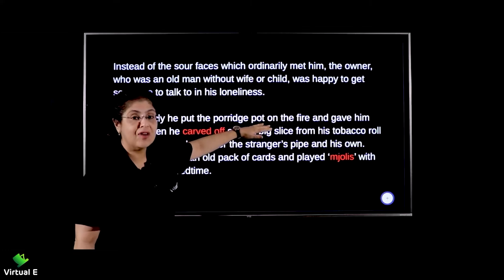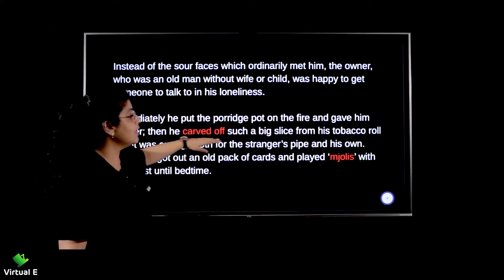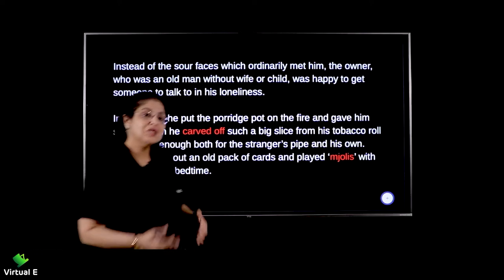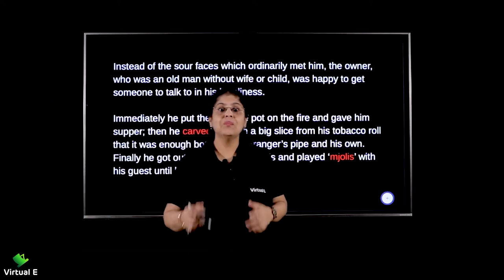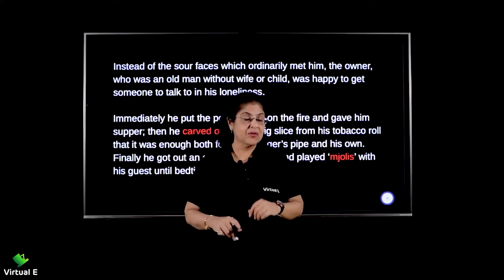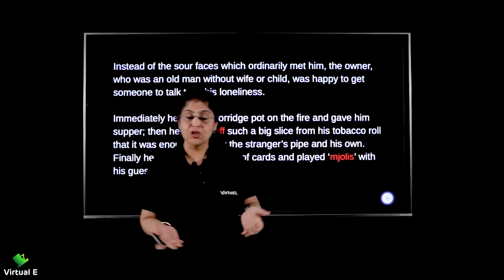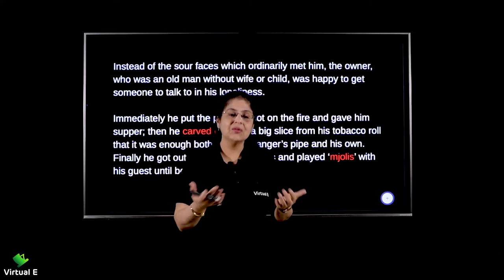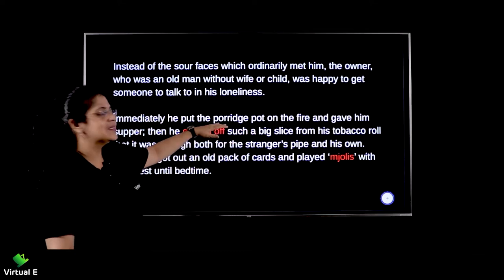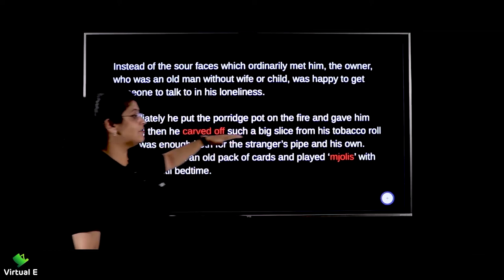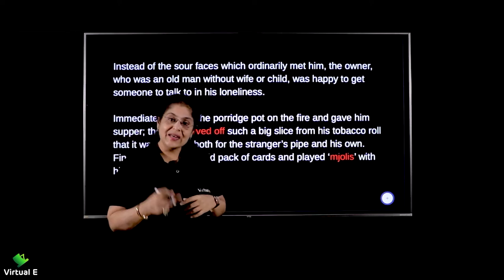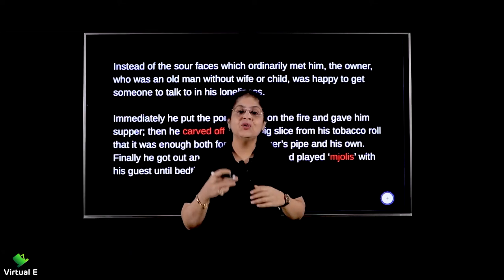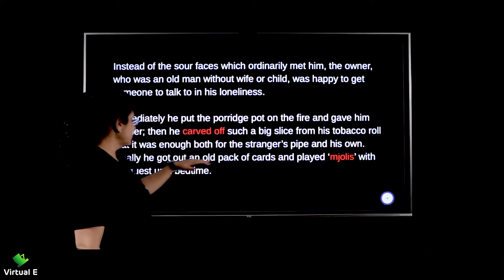Immediately he put the porridge pot on the fire and gave him supper. Then he carved off such a big slice from his tobacco roll that it was enough both for the stranger's pipe and his own. Hospitality — Mehmaan Nawazi, Atithi Devo Bhava — that's what we call in India. He put up porridge — something like khichdi — on the fire. He gave him supper and he cut a big slice from his tobacco roll, enough to smoke for himself as well as the stranger.